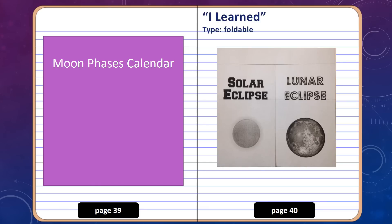Your next task is to do your I Learned page, and I'll show you how to do that right now. To finish up with this lesson, go ahead and open your interactive science notebooks to page 39 and 40. On page 39, you will see the moon phases calendar, which will get started soon. And then your I Learned page is from this lesson. So you'll see a solar eclipse and a lunar eclipse foldable.